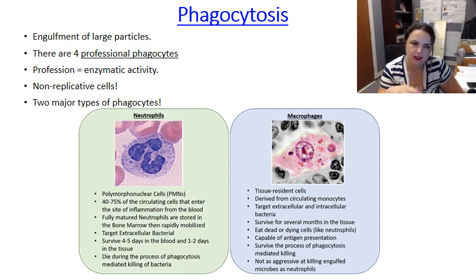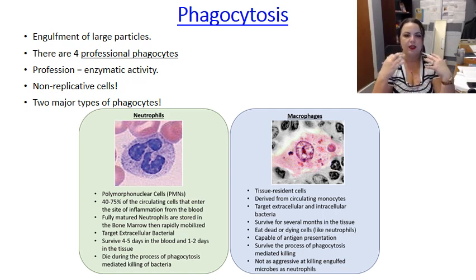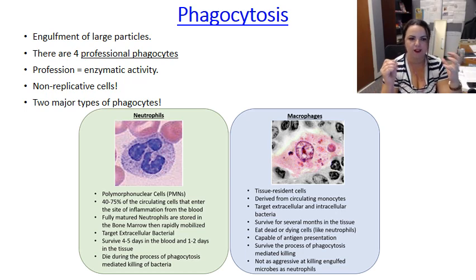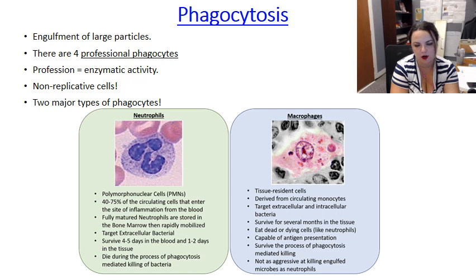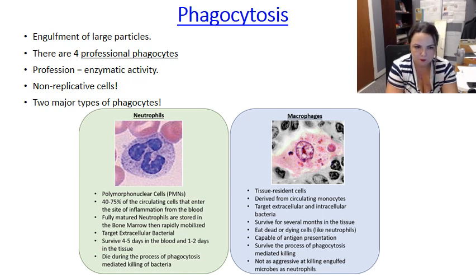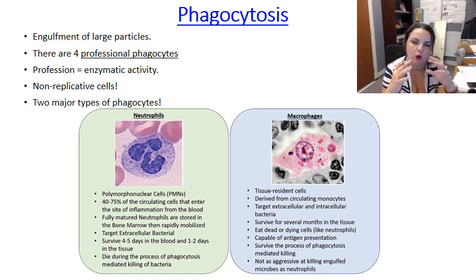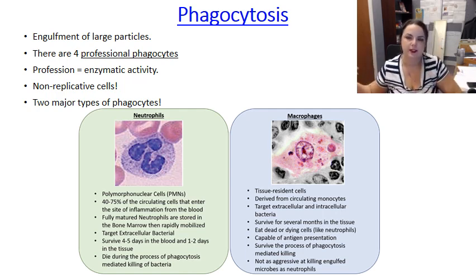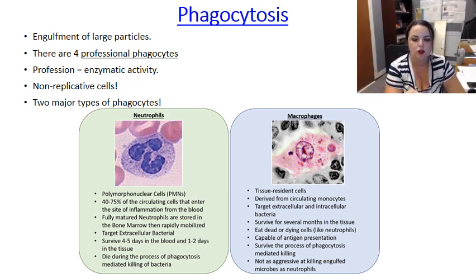There are really only four professional phagocytes in the body. They're referred to as professional because they have the enzymatic machinery to destroy or kill what they've eaten. Those are monocytes and macrophages — monocytes being the blood form of the macrophage, and macrophages being the tissue-resident form. Neutrophils are the other big one, and eosinophils as well. Dendritic cells are capable of phagocytosing while immature, but as they mature they perform antigen presentation instead.